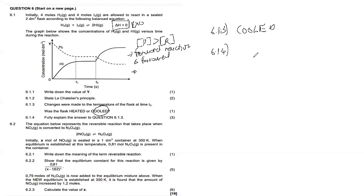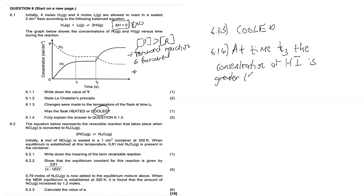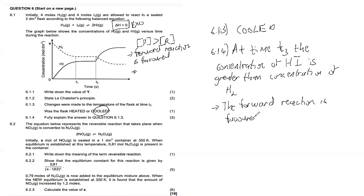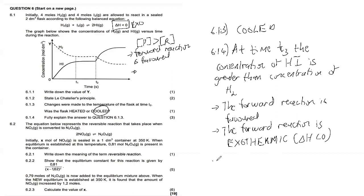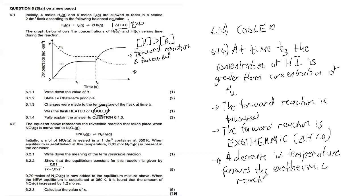For the explanation: at time t2, the concentration of HI is greater than the concentration of H₂, which means the forward reaction is favoured. We know the forward reaction is exothermic, and a decrease in temperature favours the exothermic reaction. Therefore, the temperature was decreased — the flask was cooled.